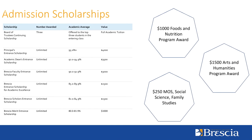Our admission scholarships are automatic and renewable year after year if you meet the criteria. Starting at an 80% average, you would be eligible for a $1,000 admission scholarship. They go all the way up to free academic tuition offered to the top three students in our incoming class. So keep working hard even after you get that offer. In addition to admission scholarships, we also have program awards. If you're coming into foods and nutrition, you get a $1,000 program award, stackable on top of the entrance scholarship. If you're coming into arts and humanities, you get a $1,500 program award. If you're coming into management and organizational studies, social science, or family studies, you would be eligible for a $250 program award.